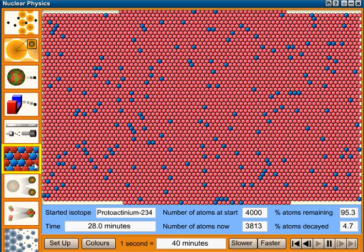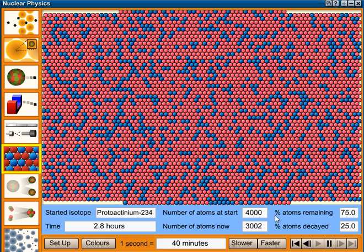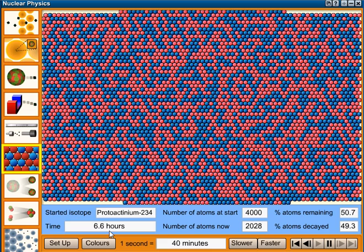This one here is to show you the decay of these red particles, and it's to get across the idea of half-life. We've got the percentage of red atoms remaining here. Now that will get down to 50% in about six and a half hours. There we go.